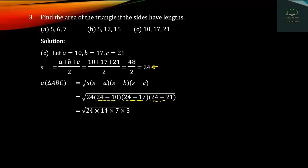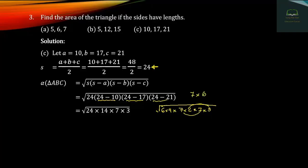Simplifying: we have 10 times 17 times 7 times 3. Breaking down: 14 equals 7 times 2, and 7 times 3. So 7 times 7 gives 7 squared, and we have 2 times 3 and 6 times 7, giving us 4 and 2 squared.